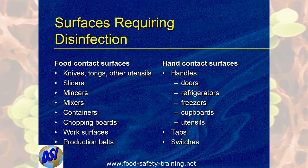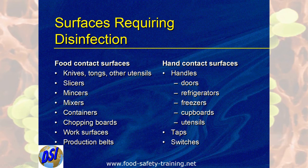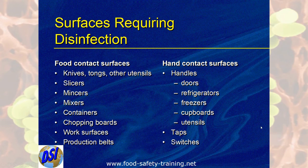Surfaces that require disinfection — not all surfaces require disinfection. Floors, walls, and ceilings, for example, do not require disinfection. The two areas that do require disinfection are food contact surfaces and hand contact surfaces. Remember those because it's another key question that comes up. Food contact surfaces include knives, tongs, utensils, slicers, mincers, mixers, containers, chopping boards, work surfaces, and production belts — all with the potential to come into contact with food.